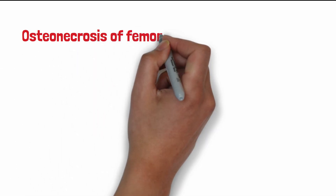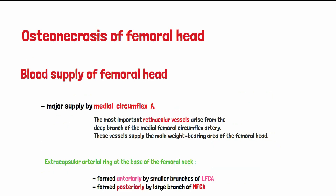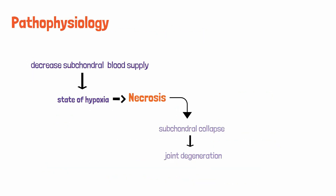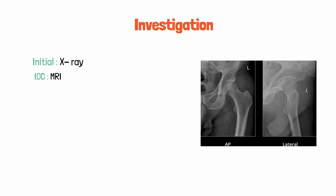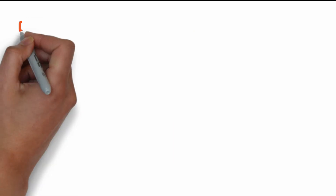In this topic we will discuss about the causes, the blood supply of the femoral head, the pathophysiology and histopathology behind avascular necrosis of the femoral head, then we will discuss about the investigations, what choices of investigations we should do, and then we will discuss about the treatment part.